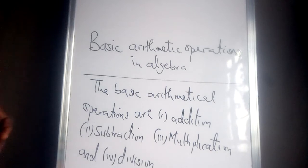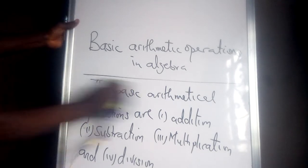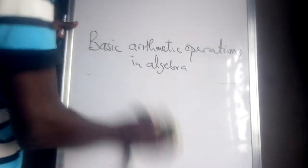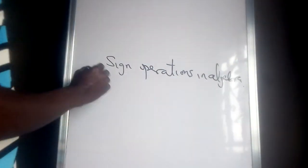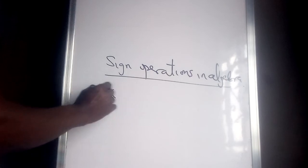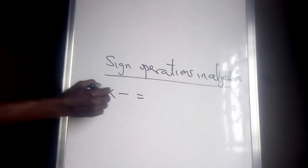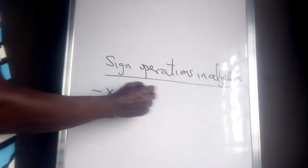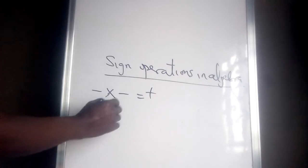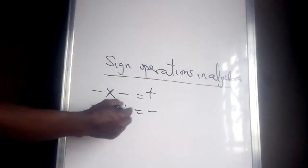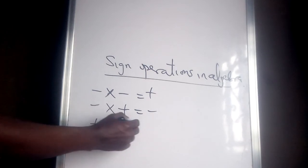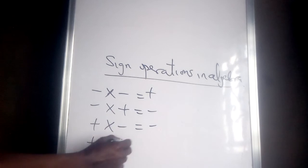Now let's look at sign operations that are used in algebra. In algebra, we start with the product of two minus signs — two minus signs give us a plus sign. The product of a minus sign and a plus sign gives us a minus sign. So: minus times minus is plus, minus times plus is minus, and plus times plus is plus.